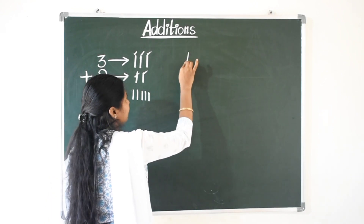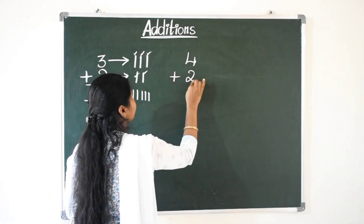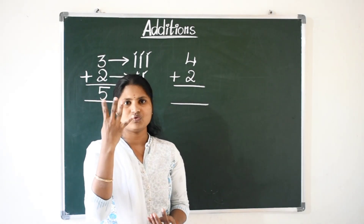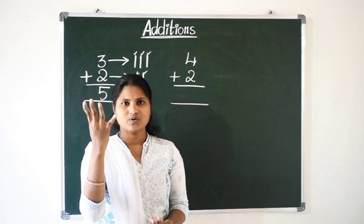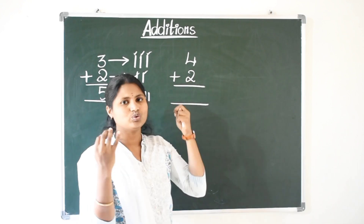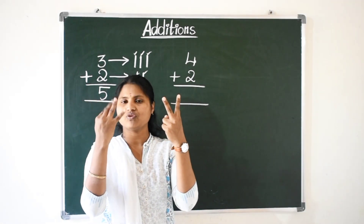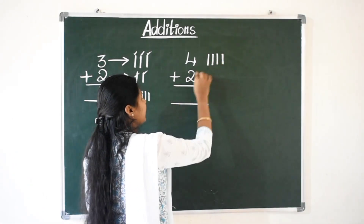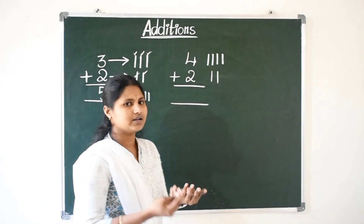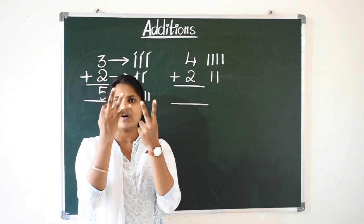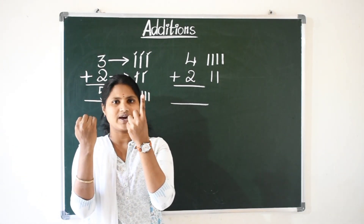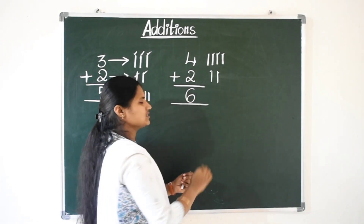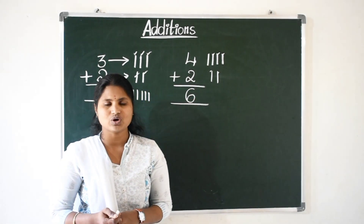Now I am taking one more example. Four plus two. Four means open your four fingers — one, two, three, four. Now open two fingers: one and two. Four fingers and two fingers. That means four means we can draw four lines also, and two means two lines. Now count all lines or count all fingers: one, two, three, four, five, six. Here also we got six. Four plus two equals six.